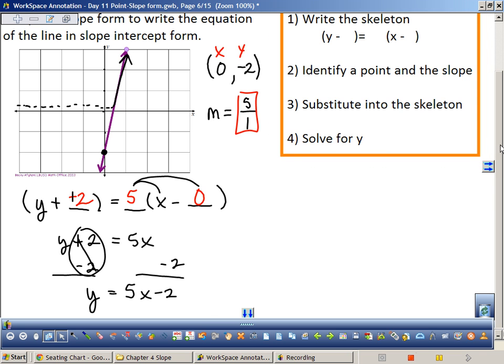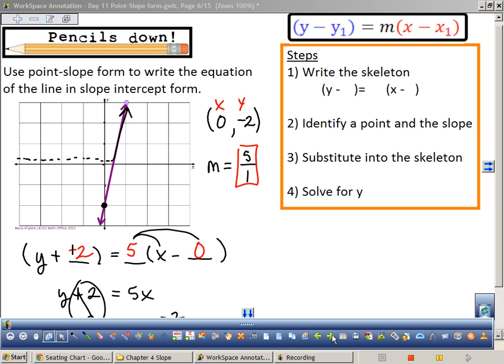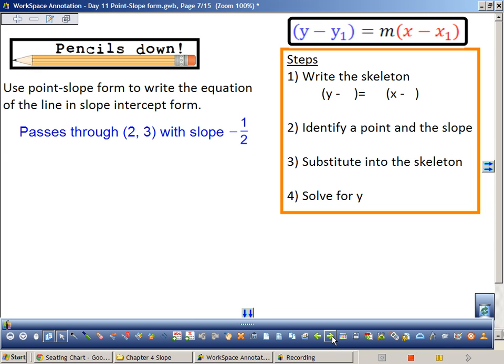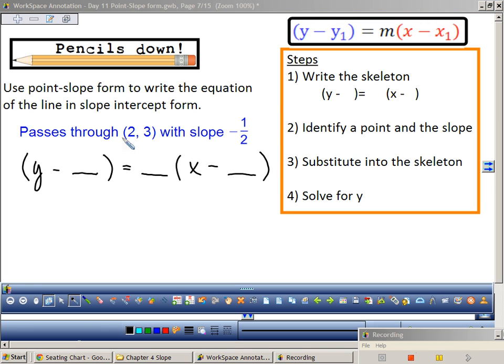Let's unveil our steps. I write a skeleton, I identify a point in the slope, substitute into the skeleton, and solve for y. Pretty straightforward. Questions so far? Pencils down. Now I don't have a graph. Let's do the same steps. What was my first step? Write the skeleton.